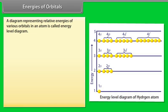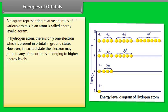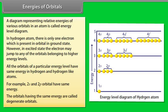Energies of Orbitals: A diagram representing the relative energies of various orbitals in an atom is called an energy level diagram. In the hydrogen atom, there is only one electron, which is present in the lowest orbital in the ground state. In the excited state, the electron may jump to any orbital belonging to higher energy levels. All orbitals of a particular energy level have the same energy in hydrogen and hydrogen-like atoms — for example, 2S and 2P orbitals have the same energy. Orbitals having the same energy are called degenerate orbitals.